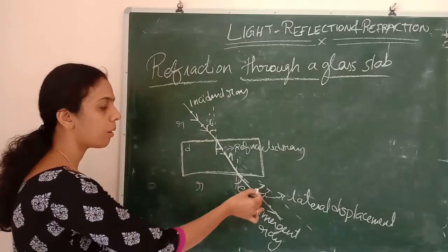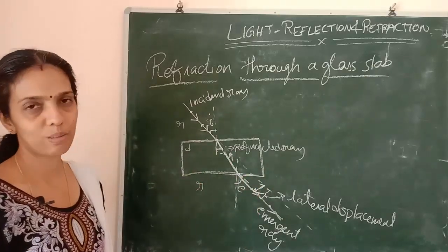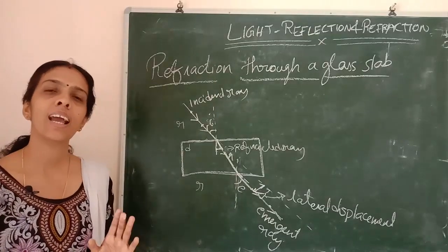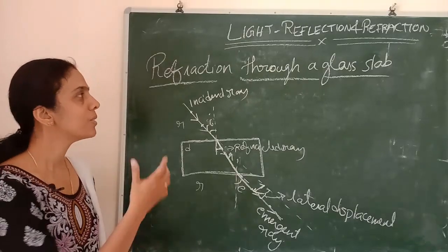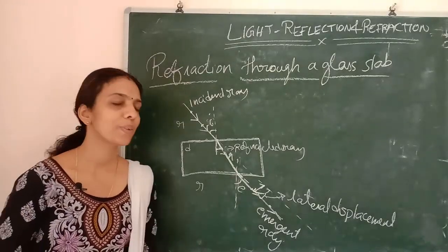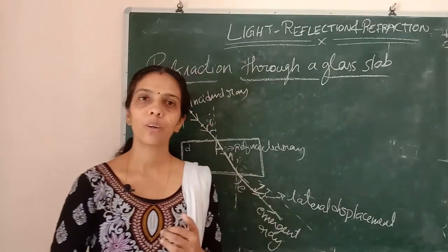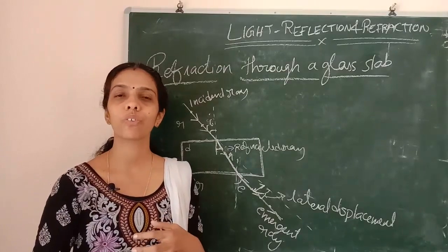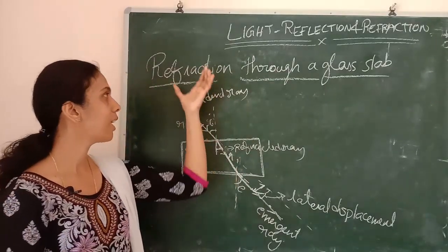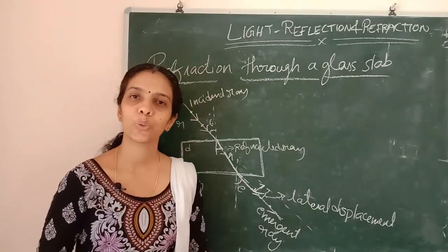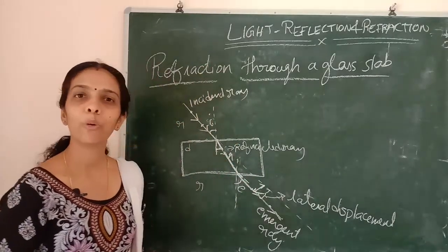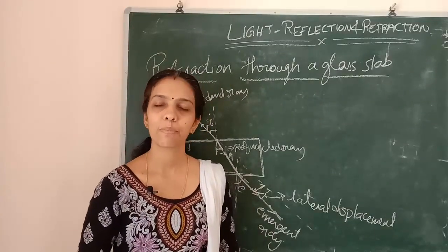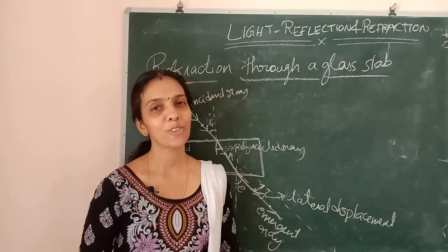The perpendicular distance between the incident ray and the emergent ray is called lateral displacement. So today we discussed refraction of light, the laws of refraction, refractive index, and refraction through a glass slab. I hope all of you understood. If you like my channel, please don't forget to subscribe. Thank you for watching. Bye.